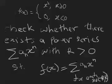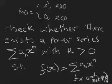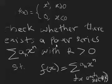We are going to discuss this one. So this function — the function is given. We have to check whether there exists a power series around 0, with radius of convergence r, such that f of x — that power series converges to this function f of x for each x in between negative r and positive r.